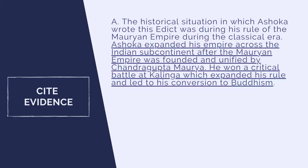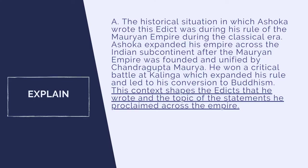For the C in ACE, you could write something like: 'Ashoka expanded his empire across the Indian subcontinent after the Mauryan Empire was founded and unified by Chandragupta Maurya. He won a critical battle at Kalinga, which expanded his rule and led to his conversion to Buddhism.' Then E — explain or link your evidence to your claim. For example: 'This context shapes the edicts that he wrote and the topic of the statements he proclaimed across the empire.'